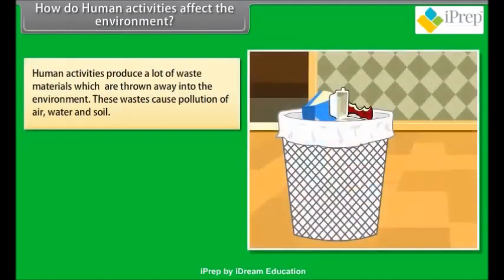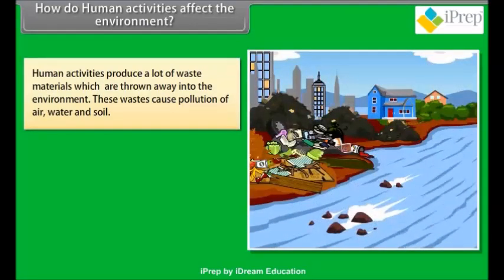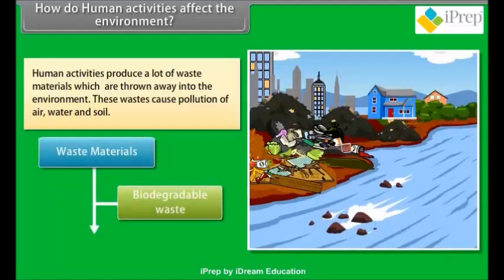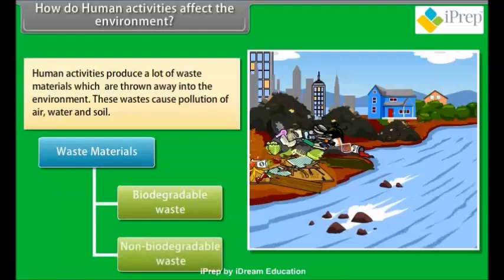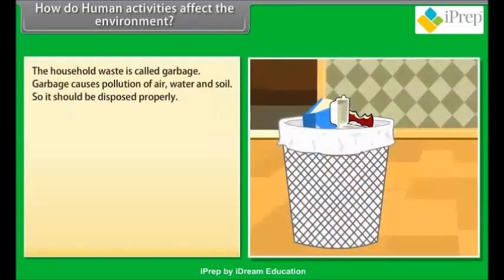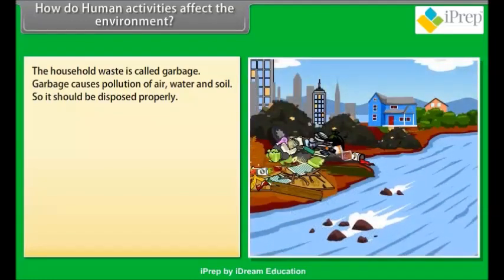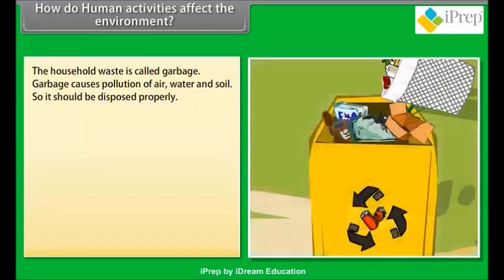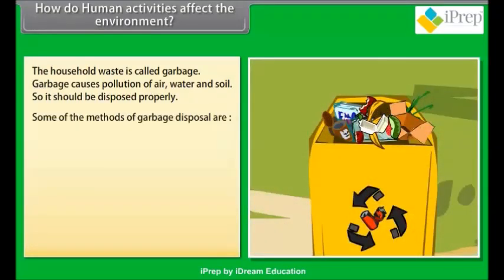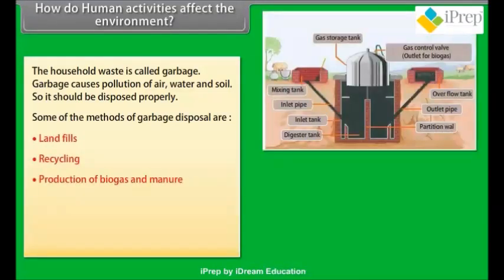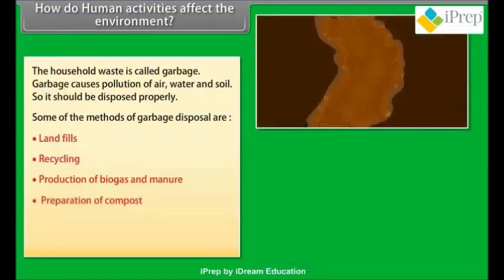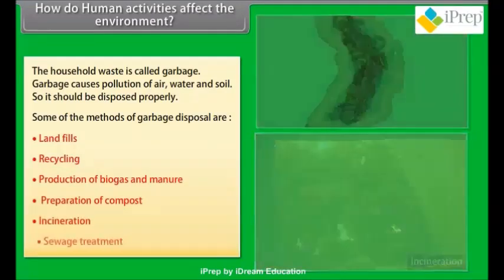Human activities produce a lot of waste materials which are thrown into the environment, causing pollution of air, water, and soil. Waste materials are of two main types: biodegradable waste and non-biodegradable waste. Household waste is called garbage, which should be disposed of properly. Some methods of garbage disposal include landfills, recycling, production of biogas and manure, preparation of compost, incineration, and sewage treatment.